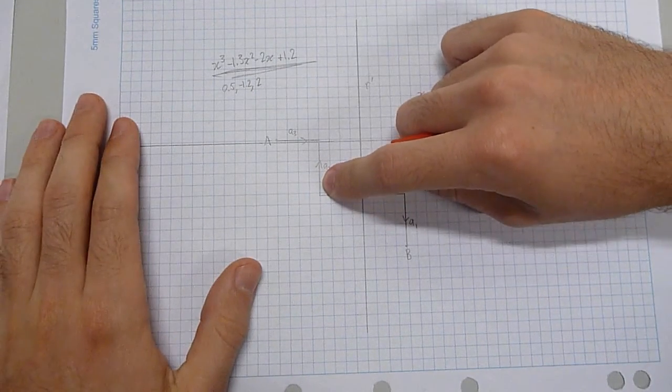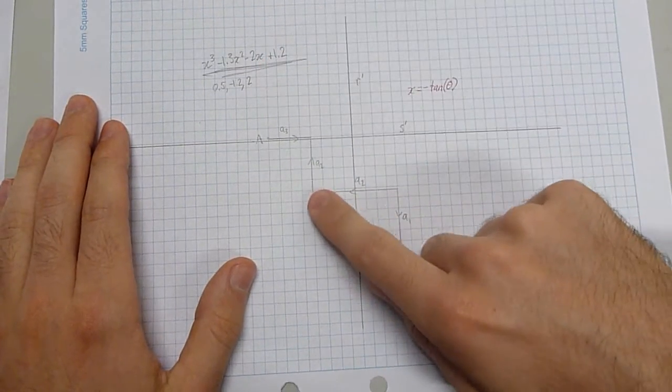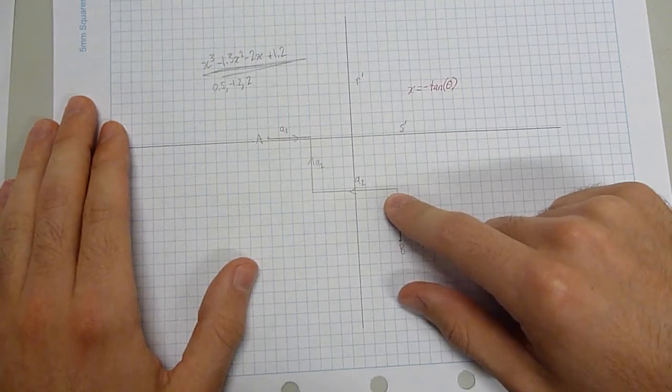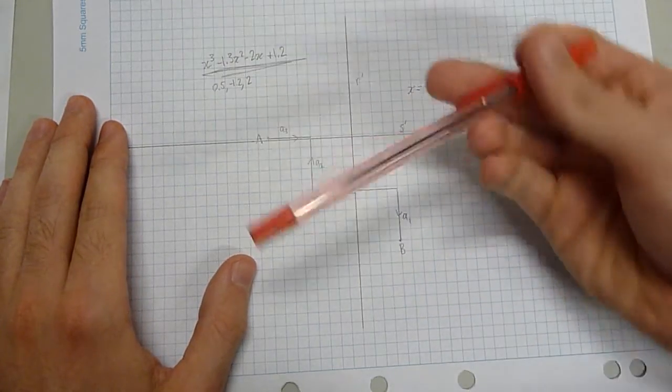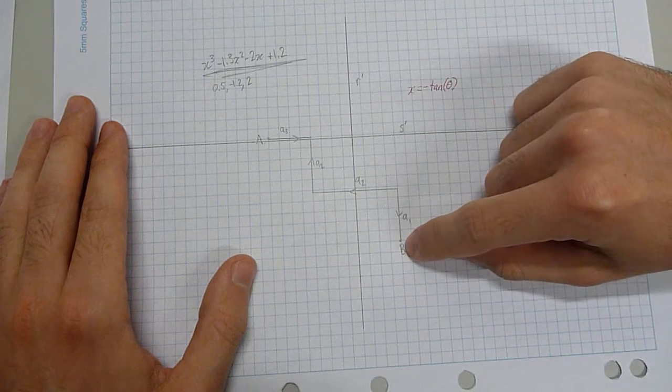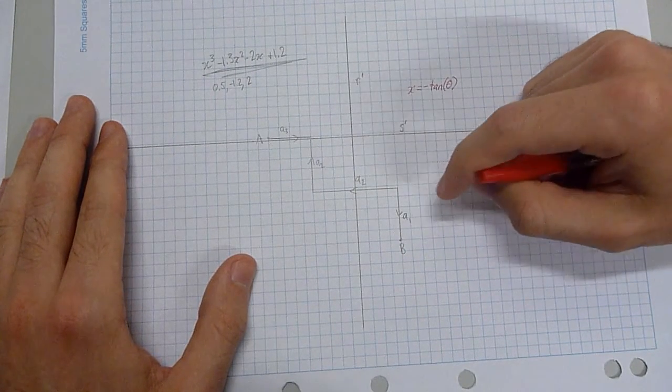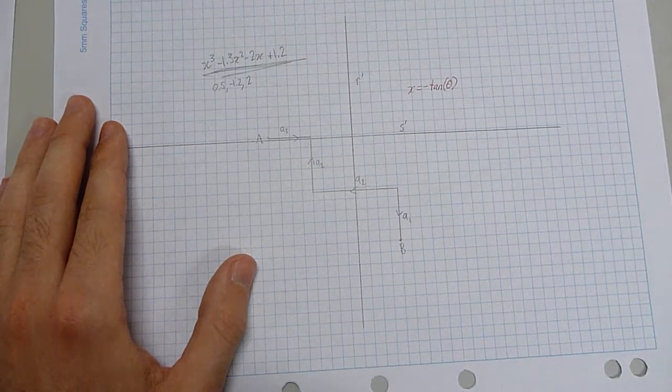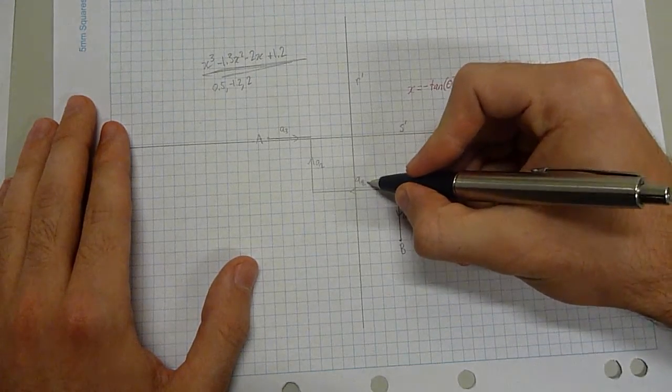And so since we have a negative coefficient, we're going to move negative that distance down, turn 90 degrees again, and then we have another negative coefficient, so we're going to move a distance corresponding to that but in the negative direction, and then we're going to turn 90 degrees once more. We have a positive coefficient, so we've moved down there, and we've got our final termination point B.